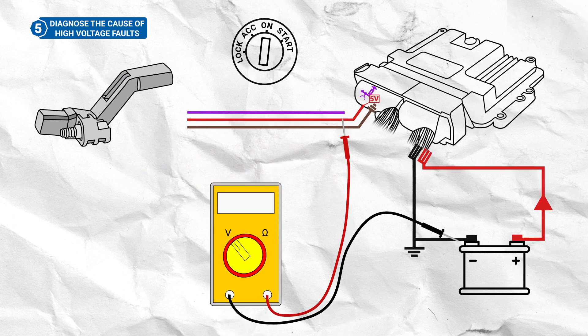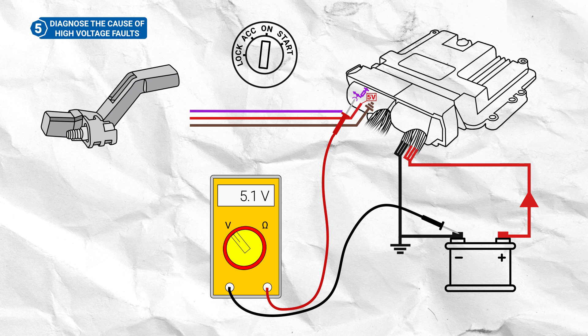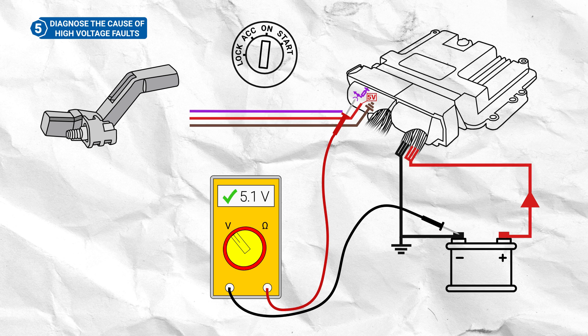To confirm this, move the red probe to the corresponding terminal on the ECU and check the multimeter reading again. If 5V is displayed here, then you can confirm the fault lies only within the loom.